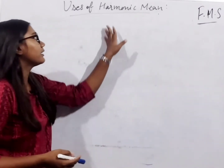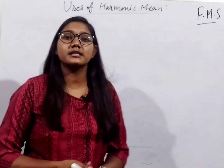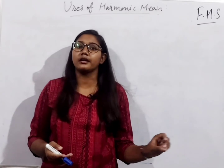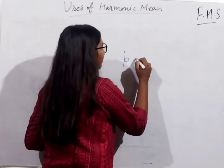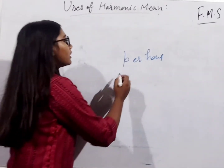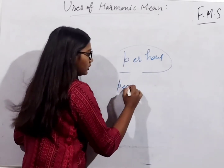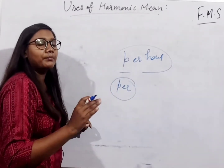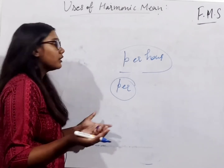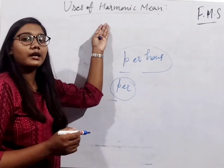Today we will study what is the use of harmonic mean. As I told you in the last video, for example, finding average speed when values are given per hour — this type of per-unit value, per liter, per hour, per kilometer — in these cases, what do we use? Harmonic mean.